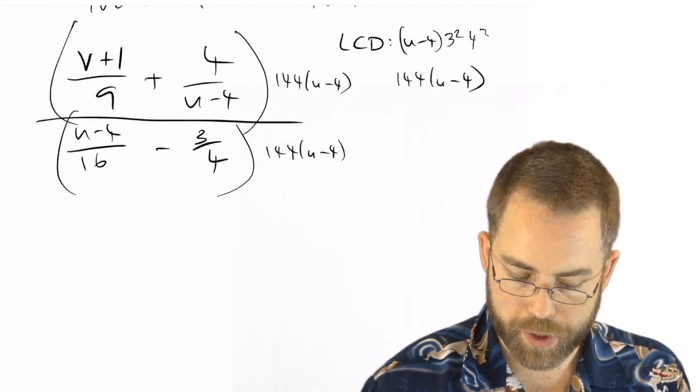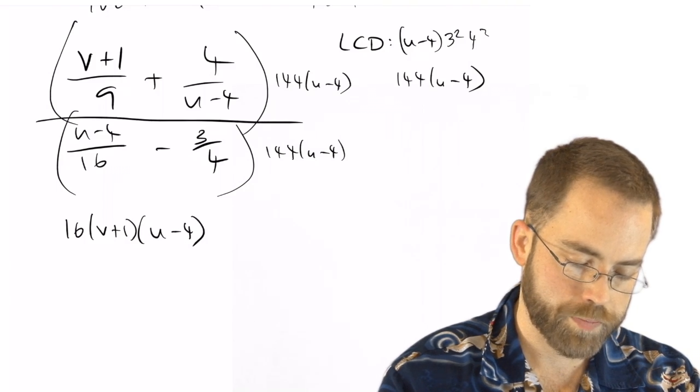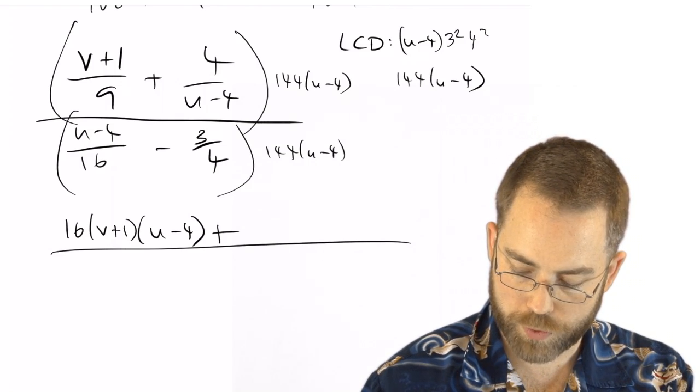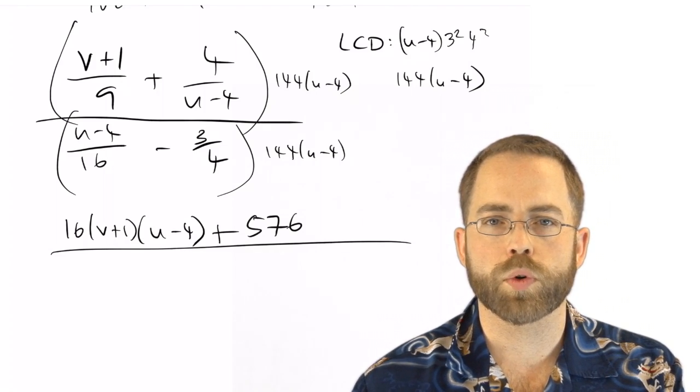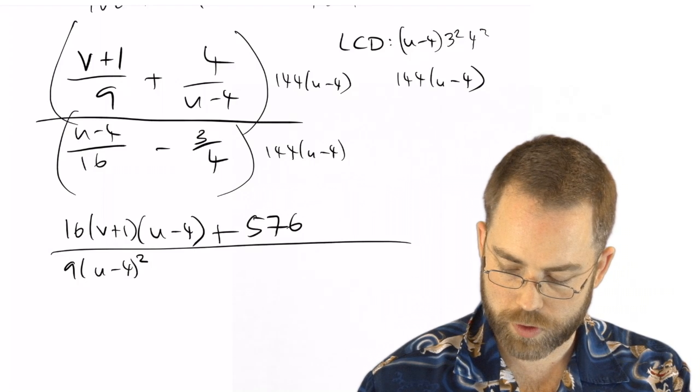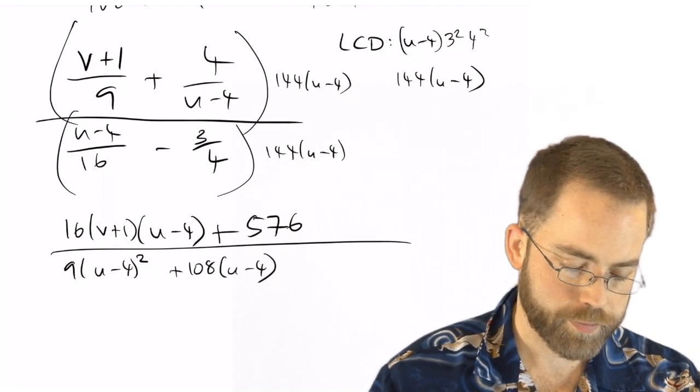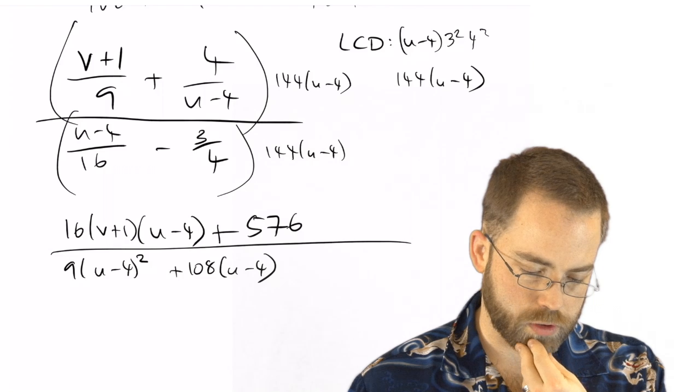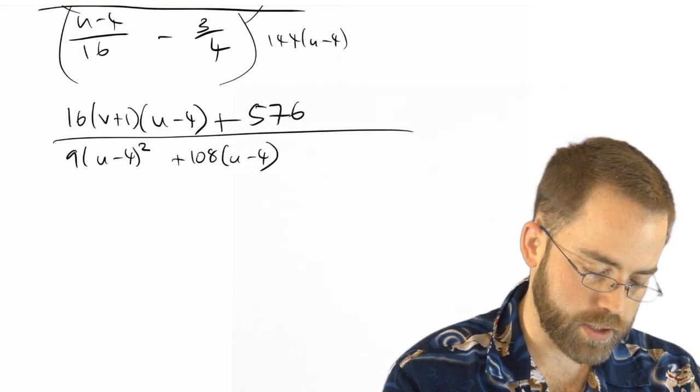144 divided by 9 is 16. So we're going to have 16 times v plus 1 times u minus 4, plus the u minus 4s are going to cancel, so we're going to have 144 times 4 is 576. And then the 16 goes into 144 nine times, so we've got 9 times u minus 4 squared. And then 144 divided by 4 times 3 is 108, so plus 108 u minus 4. So I think we are going to get some numbers on top that are going to cancel and some numbers on bottom that are going to cancel. So we have to keep going and try to clean all this up.